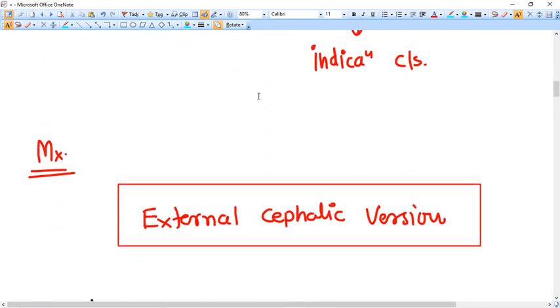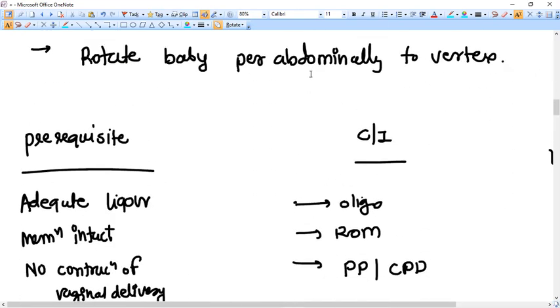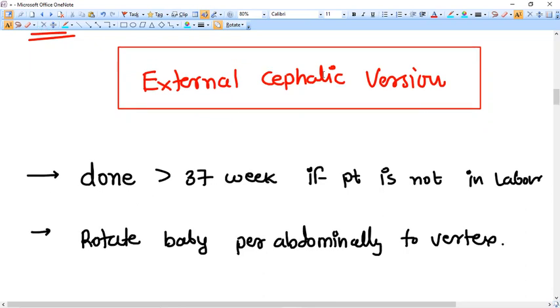Now the very important part is what is the management of the breech. If the patient comes to you before the labor starts and it has completed the term like 37 weeks you can go for external cephalic version. In external cephalic version what we do is we just rotate the baby with the help of palpation abdominally. This method previously was very enthusiastically used but nowadays it is not used. Why it is not used? Because there are risks to the babies.